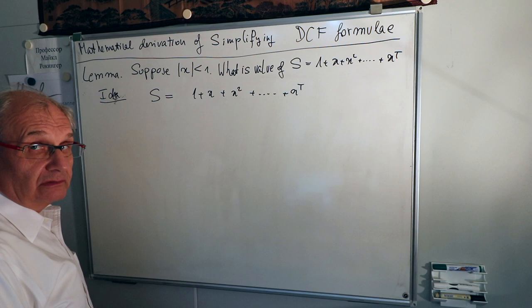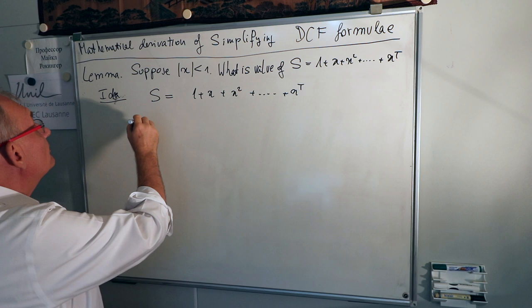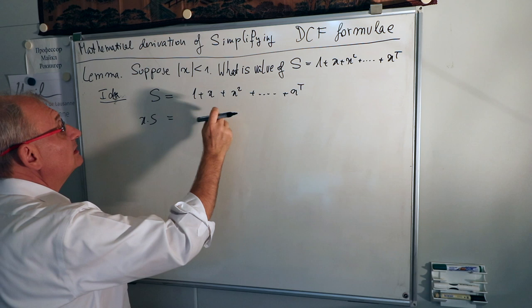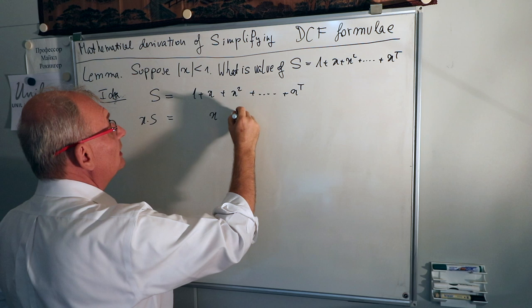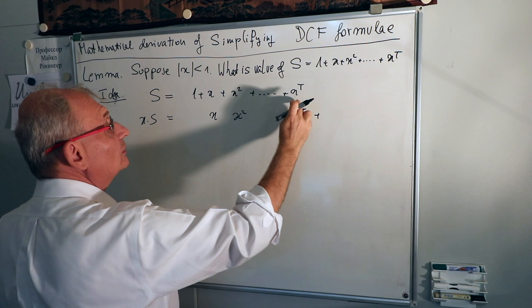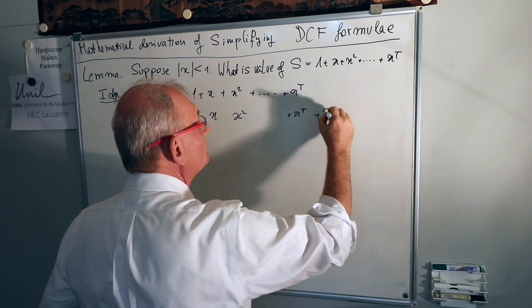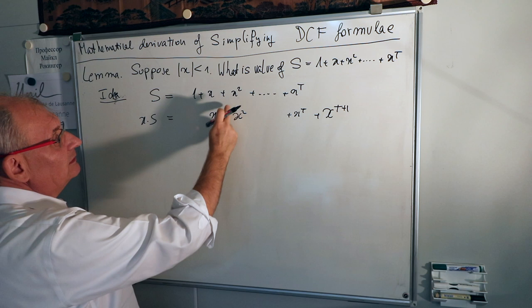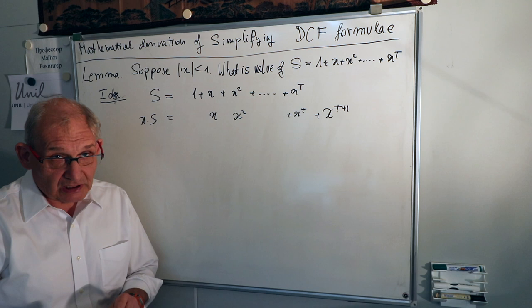At this stage you try things. Consider what happens if you take x times S. If you take xS, the first term is x, the second term is x squared, and the last term is x^t multiplied by x, giving x to the power t plus 1. Now we see that corresponding terms in S and xS are equal, so the next idea is to subtract one from the other.